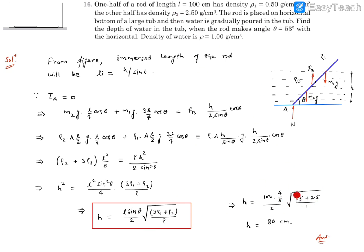Everything is in CGS, so that becomes square root of 4, that turns out to be 2. 2 and 2 getting cancelled out, numerator is 400 by 5, that is basically 80 cm.